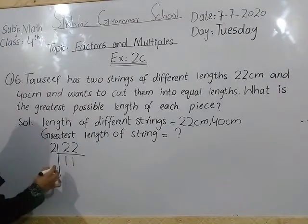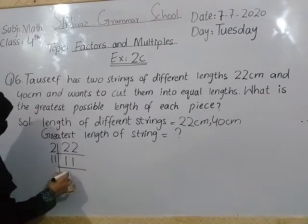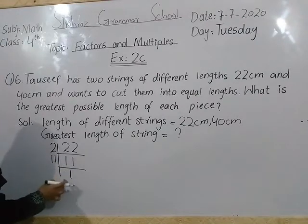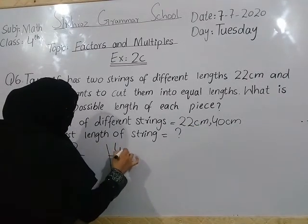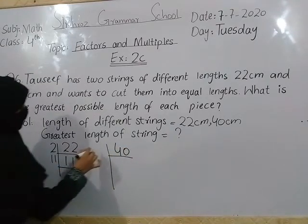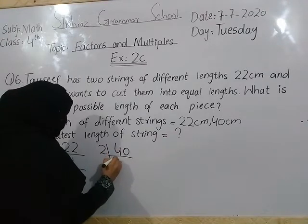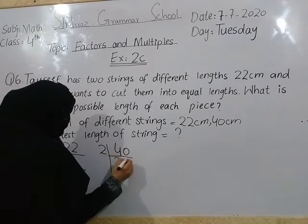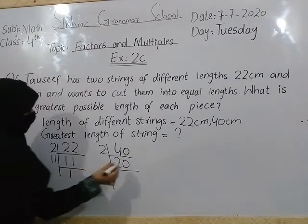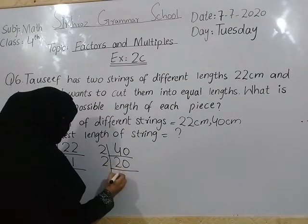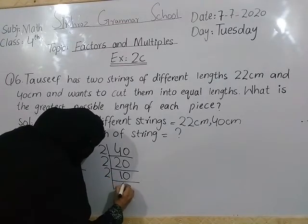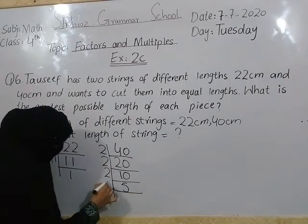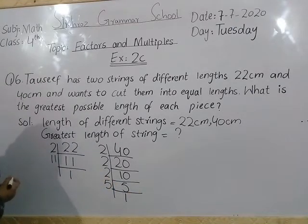The remainder is 11. You continue until the remainder is zero. Now the second value is 40. The last digit is even, so we divide by 2. 2 tens are 20, and 2 twos are 4 — remainder 0. 2 tens are 20, 2 fives are 10, and 5 is the last factor.